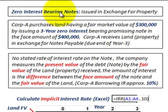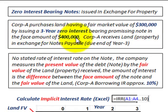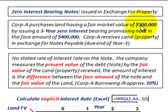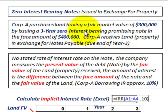We're looking at a zero interest bearing note issued in exchange for property. Corporation A purchases land having a fair market value of $300,000 by issuing a three-year zero interest bearing promissory note with a face amount of $400,000. Corporation A receives this land from the landowner and won't be making any payments until the end of the third year, at which point they'll pay $400,000.